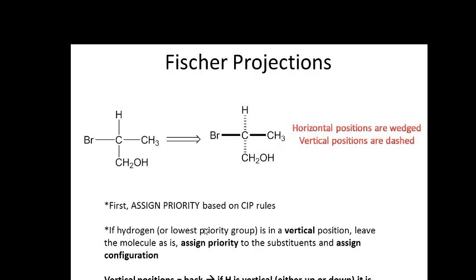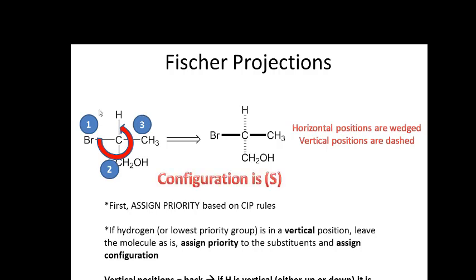If hydrogen is vertical — either up or down — you follow the normal procedure for assigning configuration. First assign priority based on atomic mass, then determine whether the groups are oriented clockwise or counterclockwise. For example, bromine is priority one, one carbon is priority two, and CH3 is priority three. Counting one, two, three gives counterclockwise, so the configuration is S.